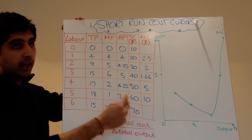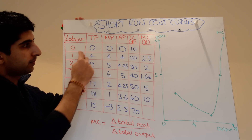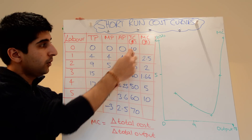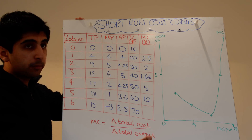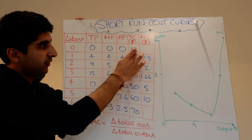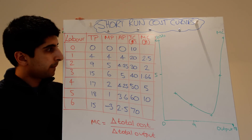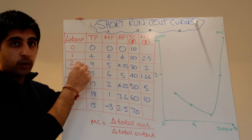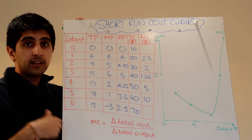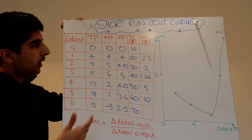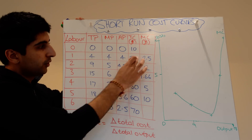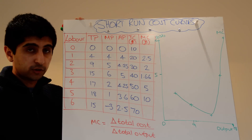The change in total cost as we increase labour from 0 to 1 is £10 — that's the difference between the two. And the change in total output from 0 to 4 is 4. So we have 10 divided by 4 equals 2.5. As we hire one more worker, the change in total cost is £10 — from 20 to 30, the change is £10. And the change in total product from 4 to 9 is 5, so we've got 10 divided by 5: £2 marginal cost.